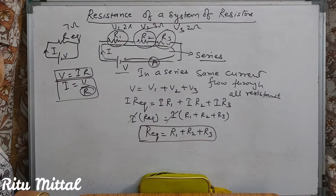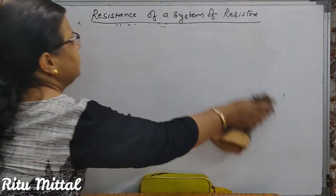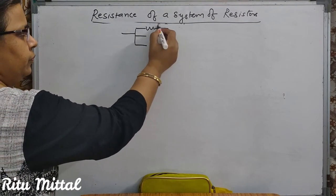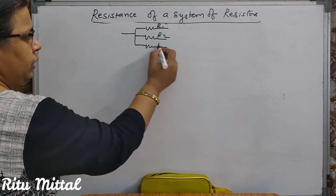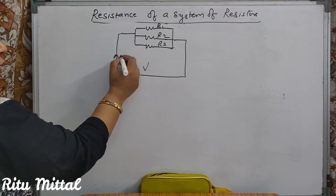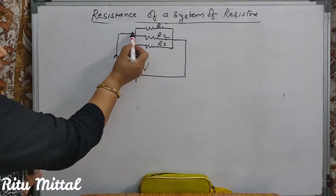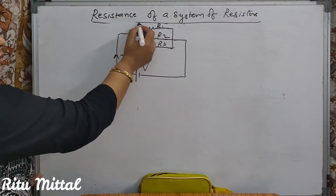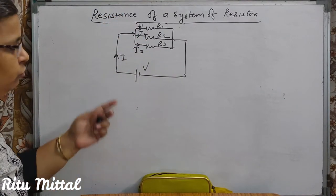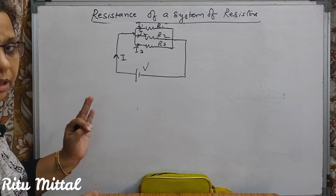Next we should study when the resistances are connected in parallel. Ab parallel mein connected hain aur un sab ko hataake bhi R equivalent lagana hai — toh R equivalent kya hoga, uski calculations kaise karenge. Same diagram — 3 resistance hain: R1, R2, R3. I3 ja raha hai — matlab tino mein alag-alag current ja raha hai. Jab alag-alag current jaata hai, we say they are in parallel connection.